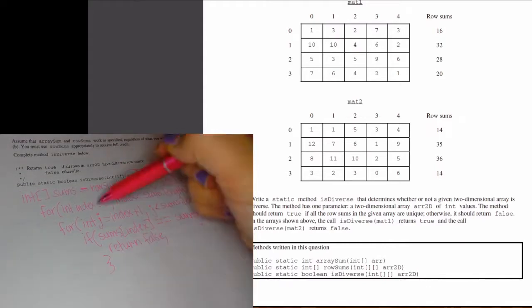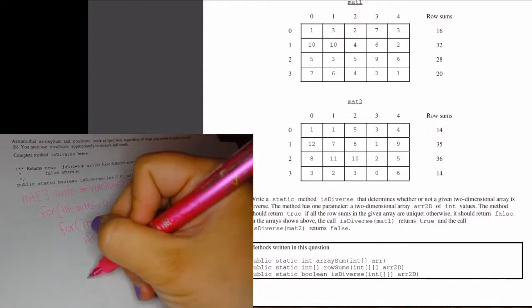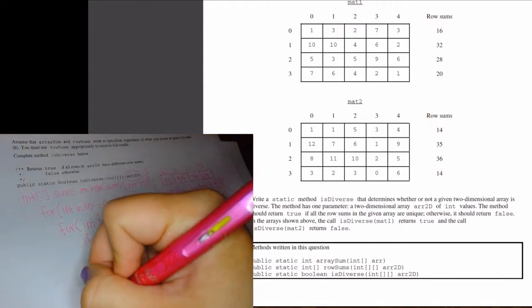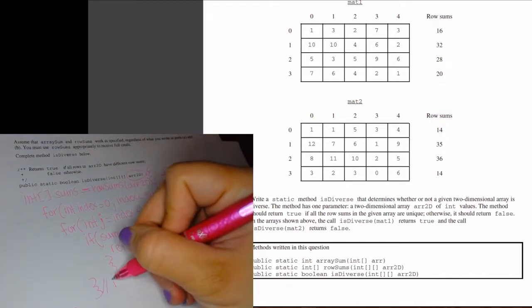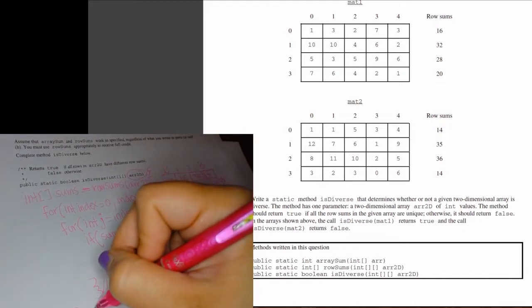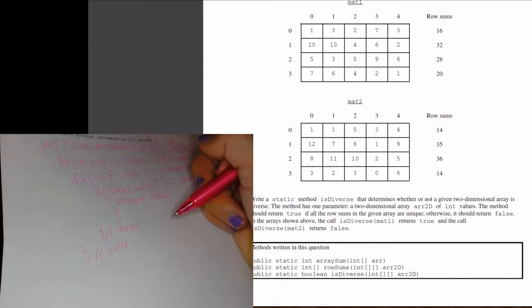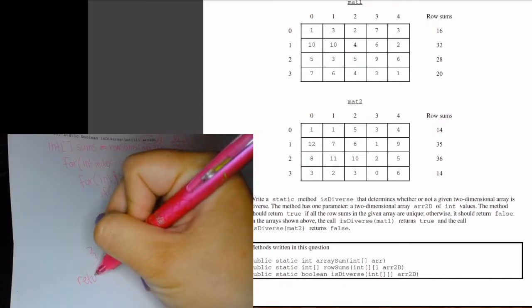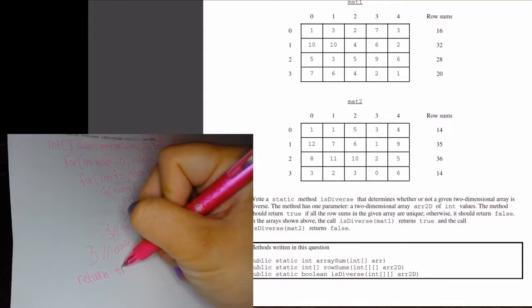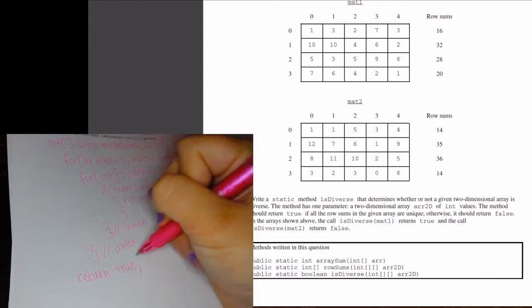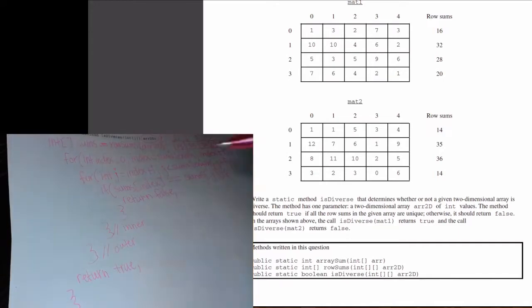If we have exhausted both for loops, so the outer and the inner for loops, we're going to close those out. This is the end of the inner and this is the end of the outer. Once those two loops have been exhausted, only then can we say yes, true, this is a diverse array. And then we'll close out the class as well.